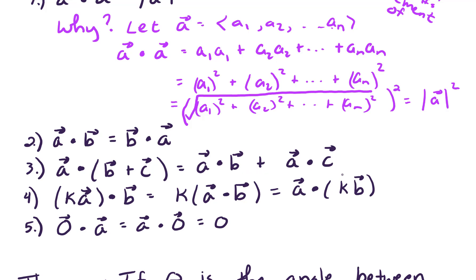We also have an associative property of scalars. So we've got a scalar k times a, that's scalar multiplication of vectors, dot b equals scalar k times a dot b, and that's also equal to a dot scalar k times b.